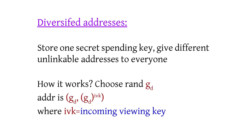A really important component in Sapling is diversified addresses. The idea is that you can store just this one secret spending key, but from it you can derive an unlimited amount of different unlinkable addresses. Working with an elliptic curve group with a hard discrete log problem, to make a new address you just choose a random element gd, and your address is going to be gd comma gd raised to the incoming viewing key. The next slide will show how this connects to the whole key structure.